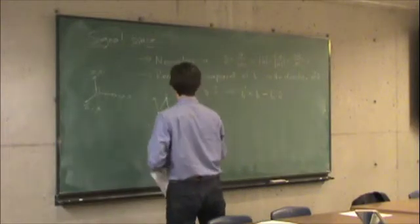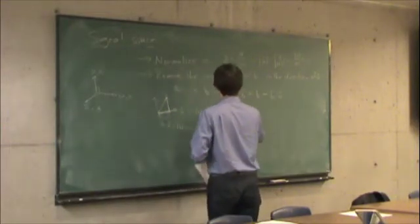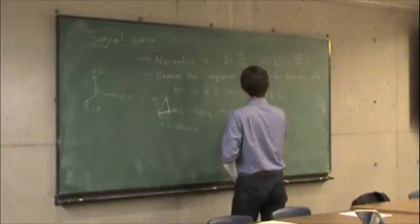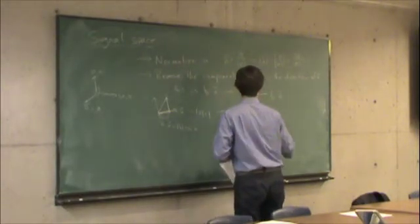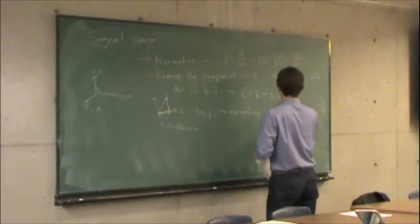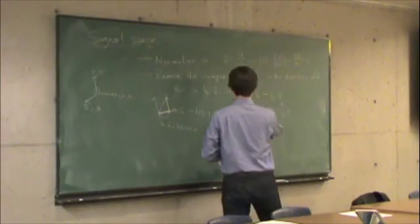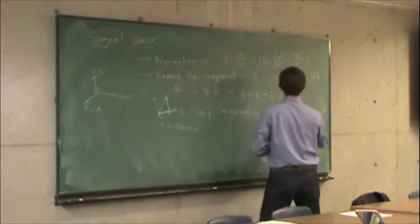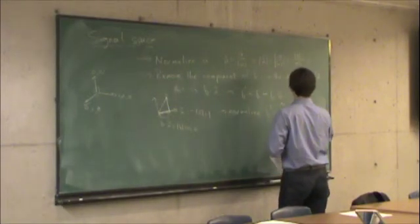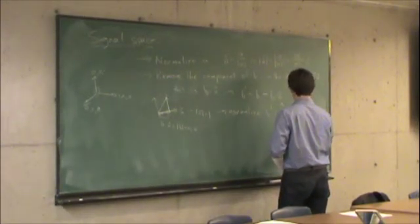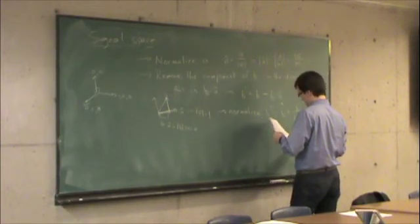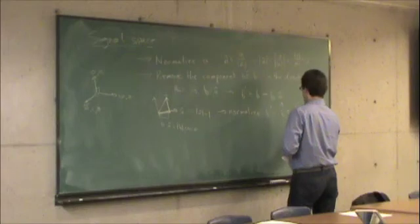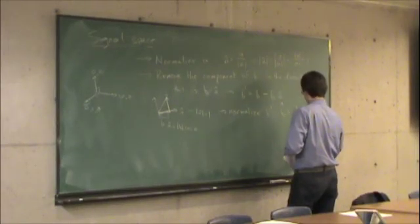And then finally, normalize B prime. So B hat is equal to, I just take this vector and make its length 1. B prime divided by norm B prime, which is equal to B minus B dot A hat divided by norm B minus B dot A hat.